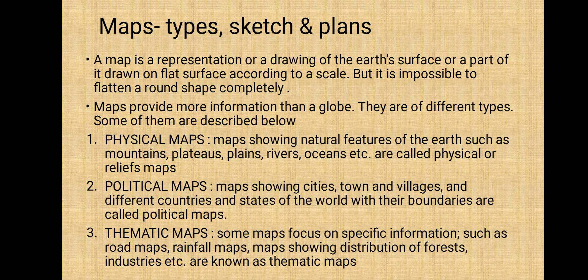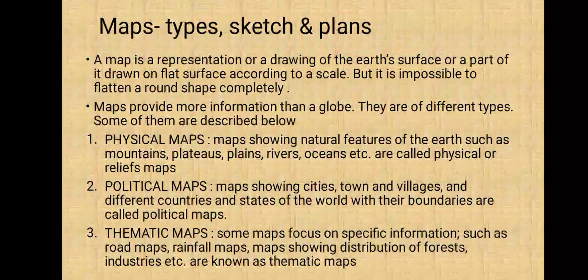What is a physical map? A physical map shows the natural features of the earth, such as mountains, hills, plateaus, plains, rivers, and oceans. These are called physical maps.